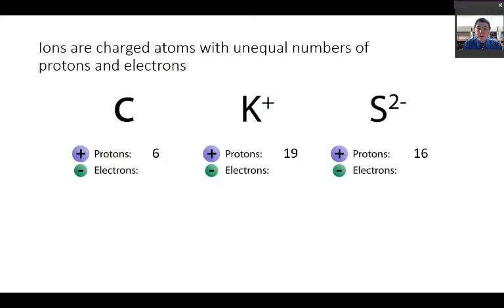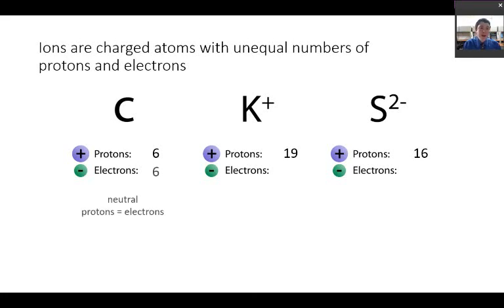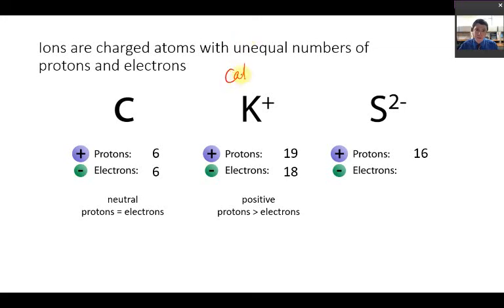Our last thing to talk about here is ions. Ions are charged atoms where there is an unequal number of protons versus electrons. You can have positively charged ions and negatively charged ions, depending on how many electrons versus protons there are. If there are the same number of electrons as protons, the element is neutral. If there are fewer electrons than protons, it is a positive charge — we call this a cation. If there are more electrons than protons, it is a negatively charged ion — we call that an anion.